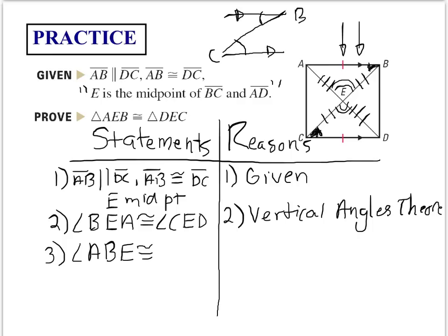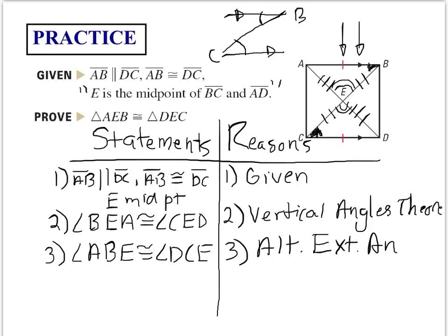Angle ABE is congruent to angle DCE because of the Alternate Interior Angles theorem. I'll leave the proof here for now — copy everything down and we'll finish it together in class.